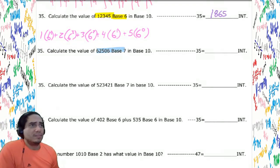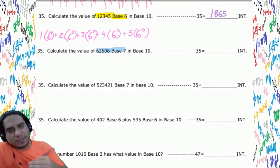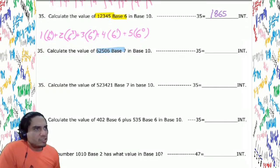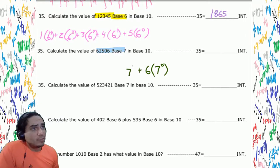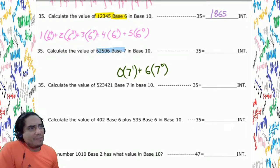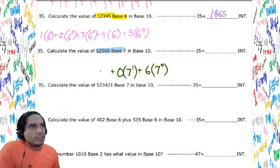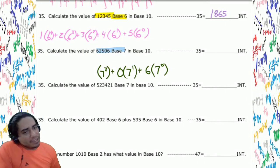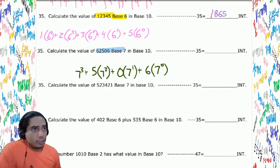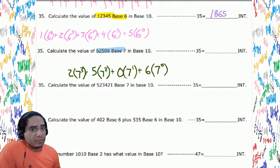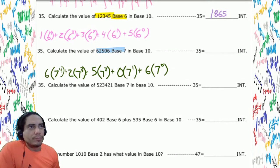Next problem: base 7 conversion. Notice the highest digit in a base 7 number is 6 — once you hit 7, the place value changes. Starting from the end: 7 to the zero, we have 6 of them; 7 to the first, we have 0 (skip it); 7 to the second, we have 5; 7 to the third, we have 2; and 7 to the fourth, we have 6.